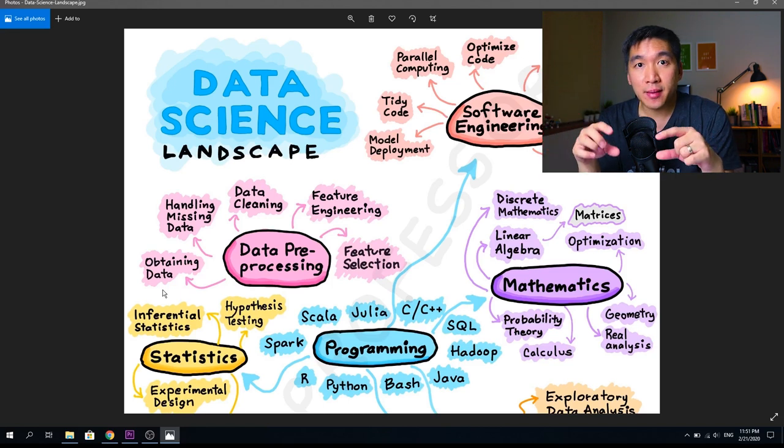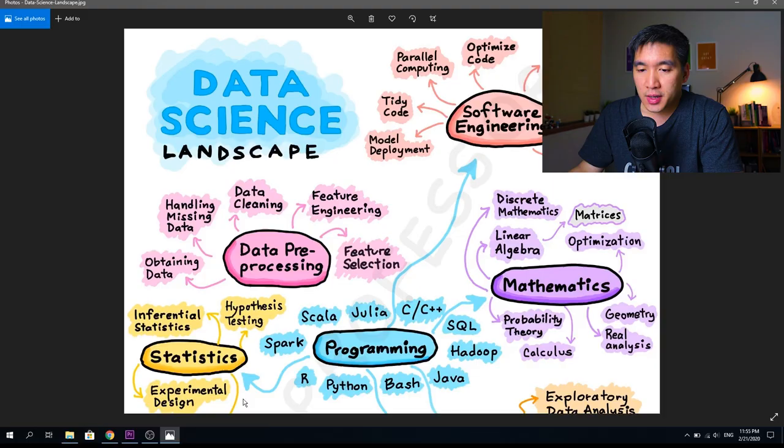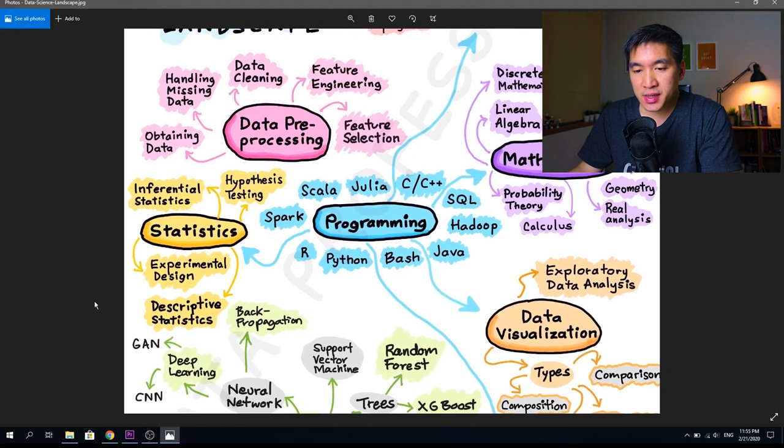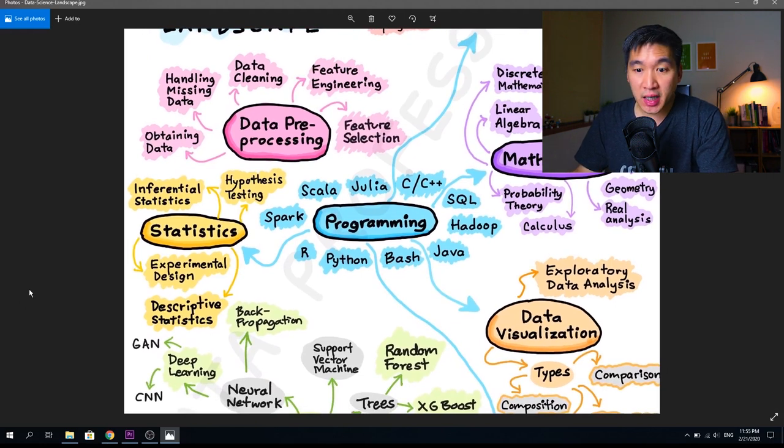This roughly concludes the data preprocessing concepts. Let's hop to the next one: statistics. Undeniably, statistics is an essential part of data science and is at the backbone. Some core concepts include inferential statistics, hypothesis testing, experimental design, and descriptive statistics. In descriptive statistics, we can get a glimpse of the relative distribution of data, comparison of multiple variables by comparing their means, evaluating differences between variables—either two variables as in a t-test or amongst multiple variables as in the ANOVA.